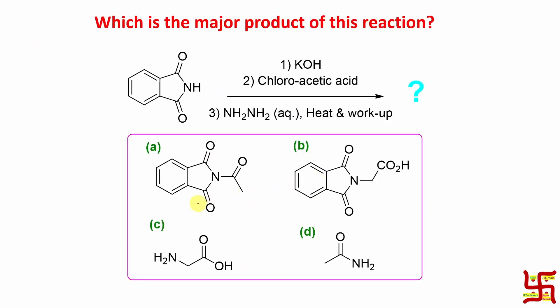Now, what is the right answer here? Obviously, the answer is option C. This product glycine. So it is actually a technique to prepare amino acid by Gabriel reaction or Gabriel phthalimide reaction. This is the strategy.